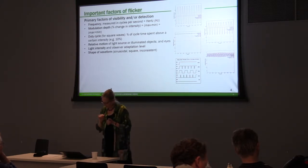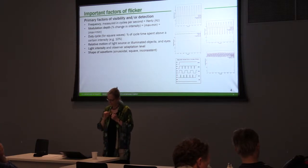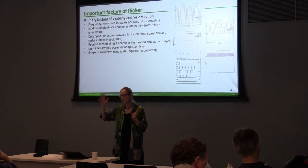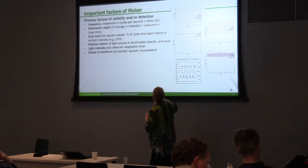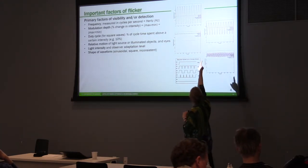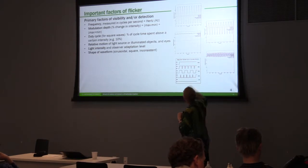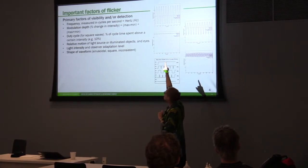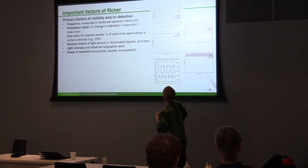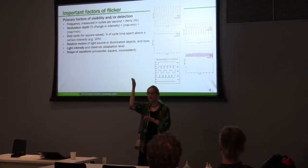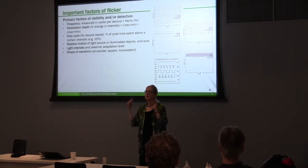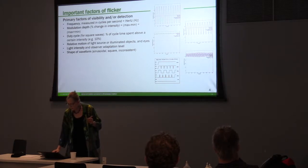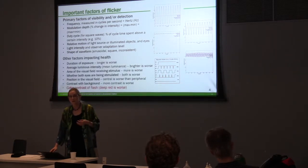The last factor is the shape of the waveform. If the waveform is sinusoidal, theoretically it's less noticeable. That's less noticeable than a square waveform. As soon as you see sharp edges in the waveform, you may be more likely to see it. Those are the factors that contribute to the visibility or detection of flicker.